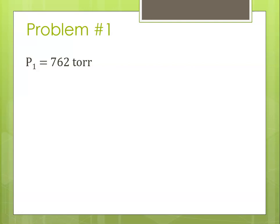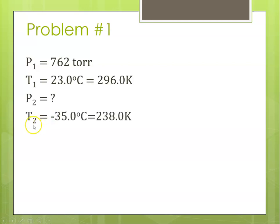So identifying variables, P1 is 762 torr. T1 is 23 degrees C, so plus 273, that's 296.0 Kelvin. P2 is what we are solving for. Our T2 was negative 35.0, so plus 273 comes to 238.0 Kelvin.